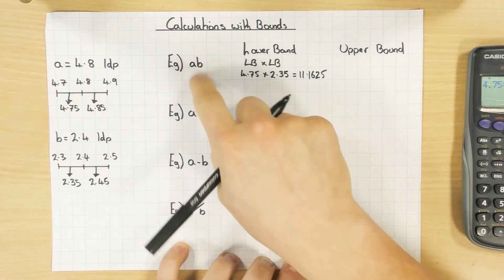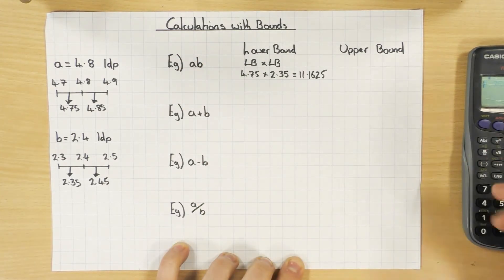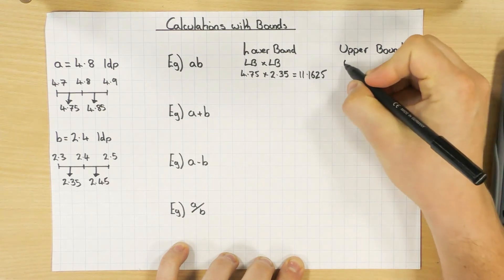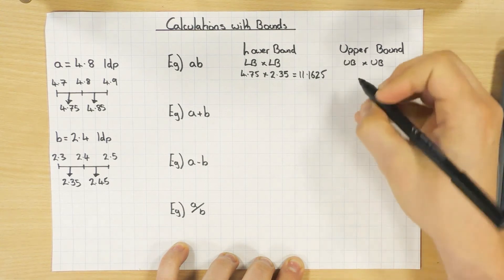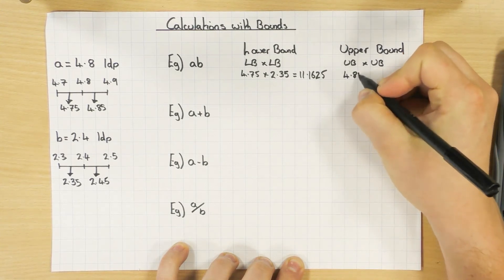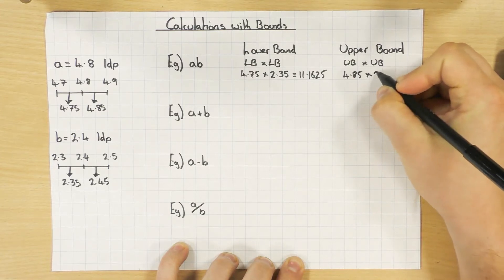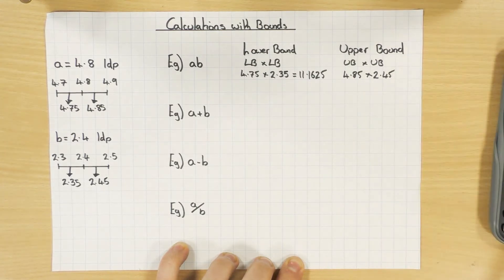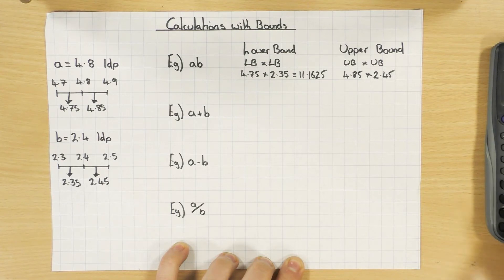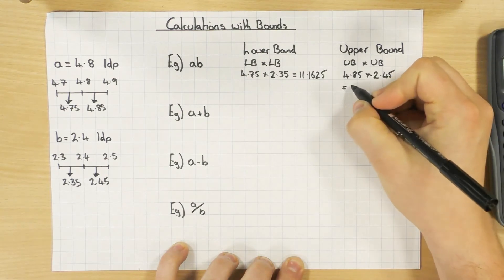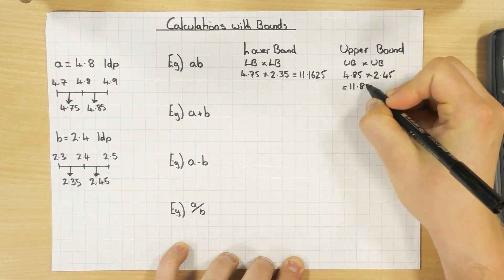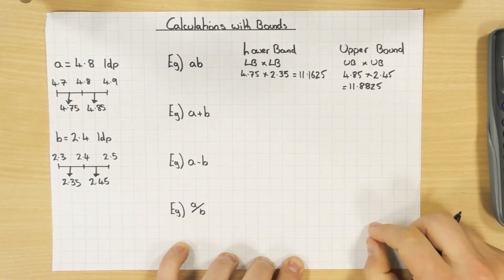For the upper bound when multiplying, you use the upper bound of both numbers. That's 4.85 × 2.45. Using a calculator: 4.85 × 2.45 = 11.8825.